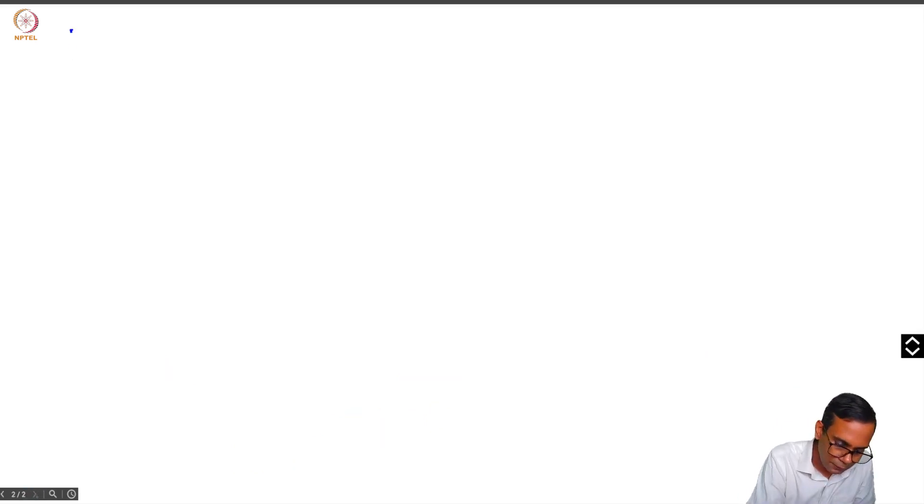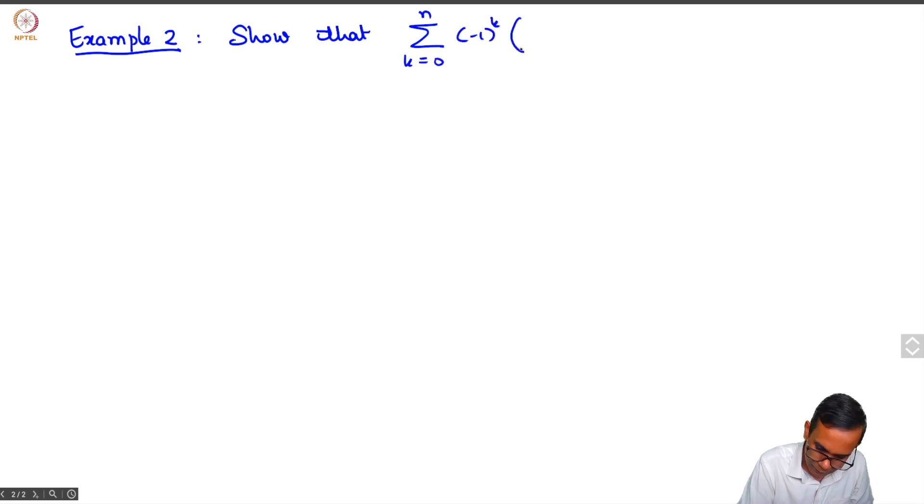Let's look at a second example which is slightly more difficult. Show that summation k goes from 0 to n, minus 1 raised to k, n choose k squared, is either minus 1 raised to n by 2, n choose n by 2, if n is even, and it is 0 if n is odd.